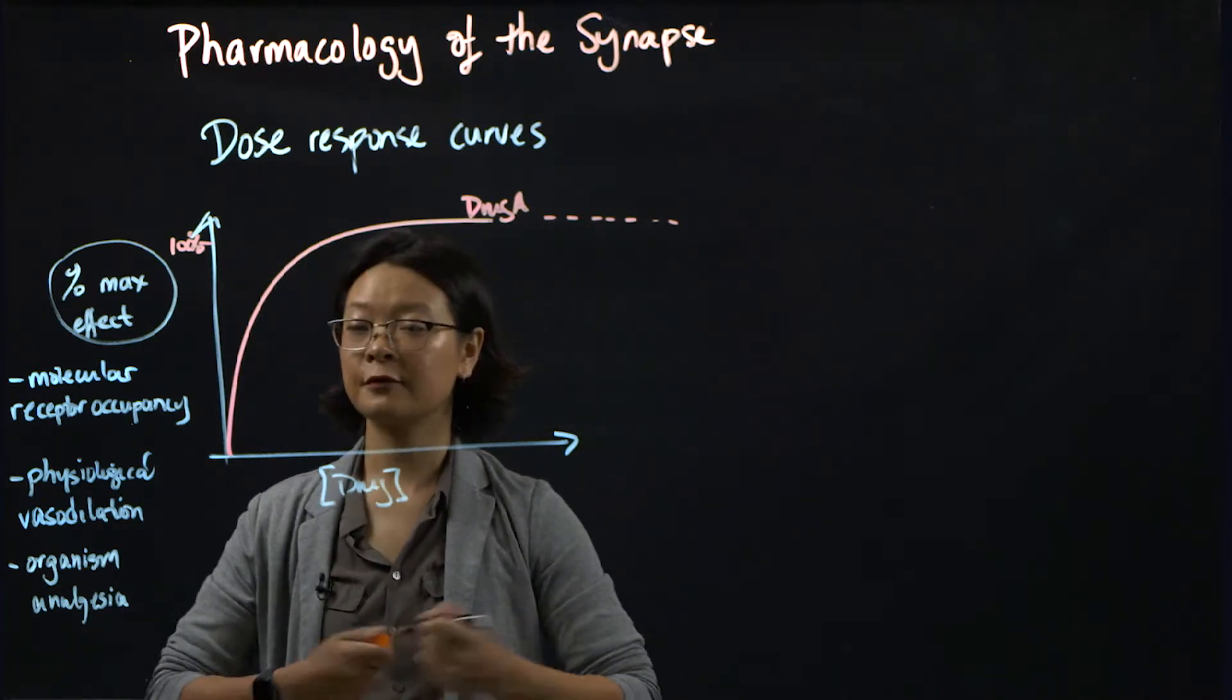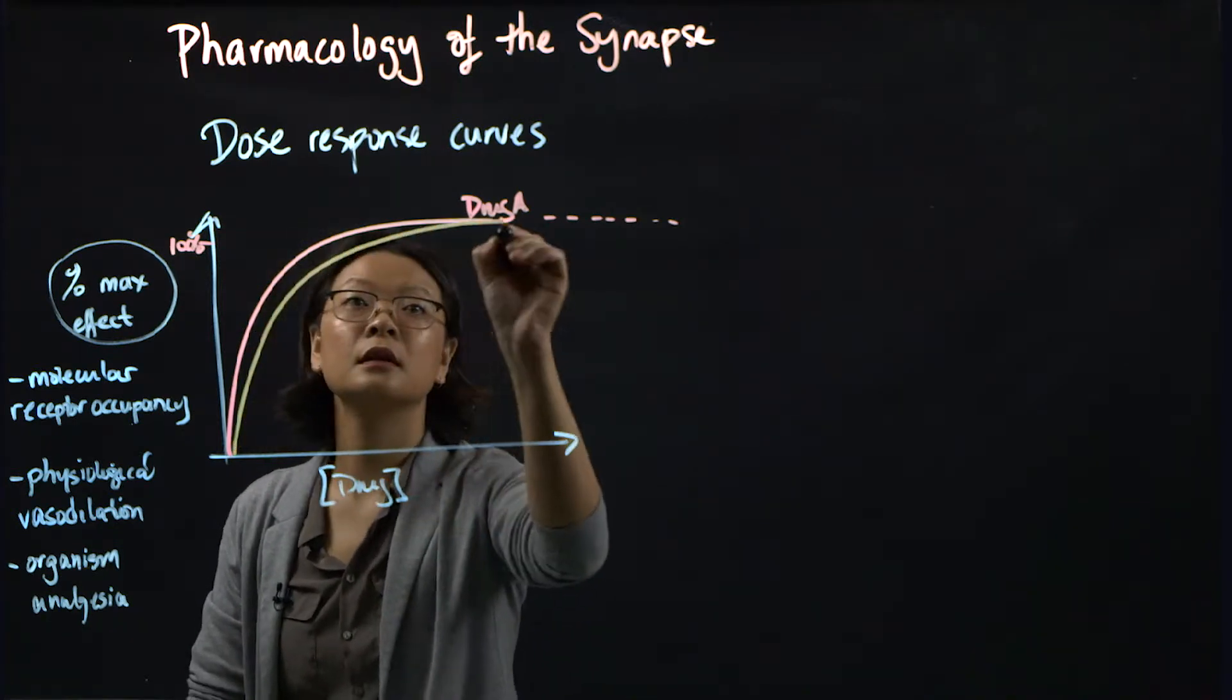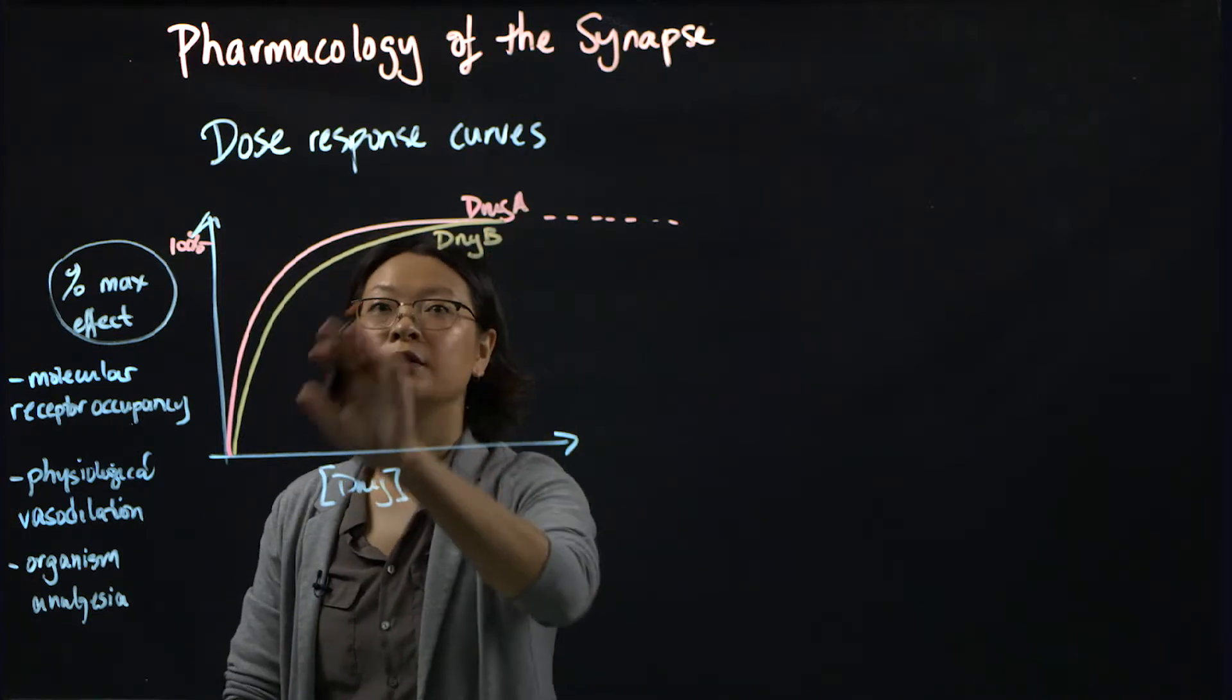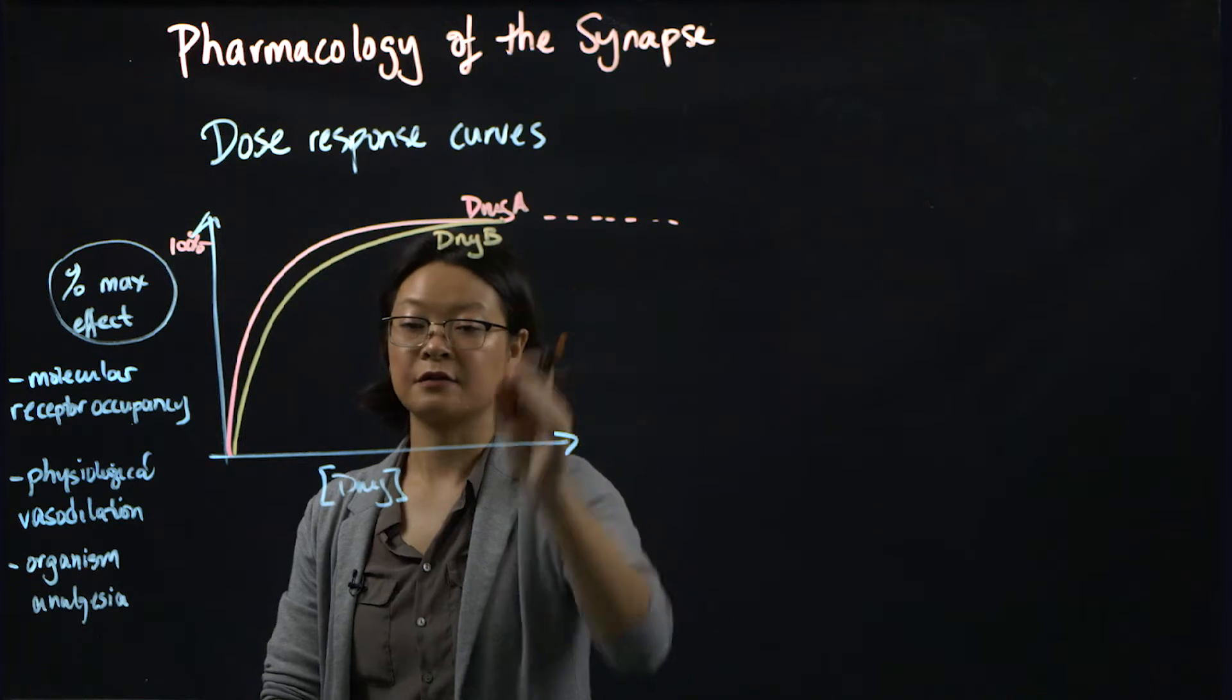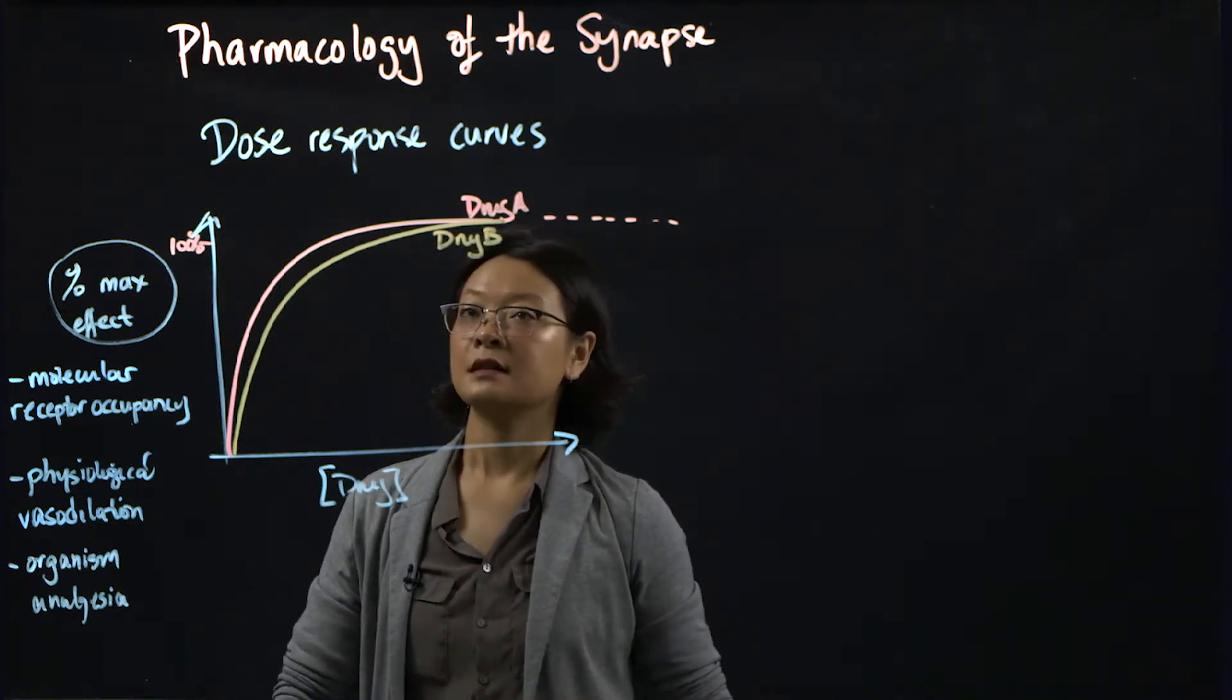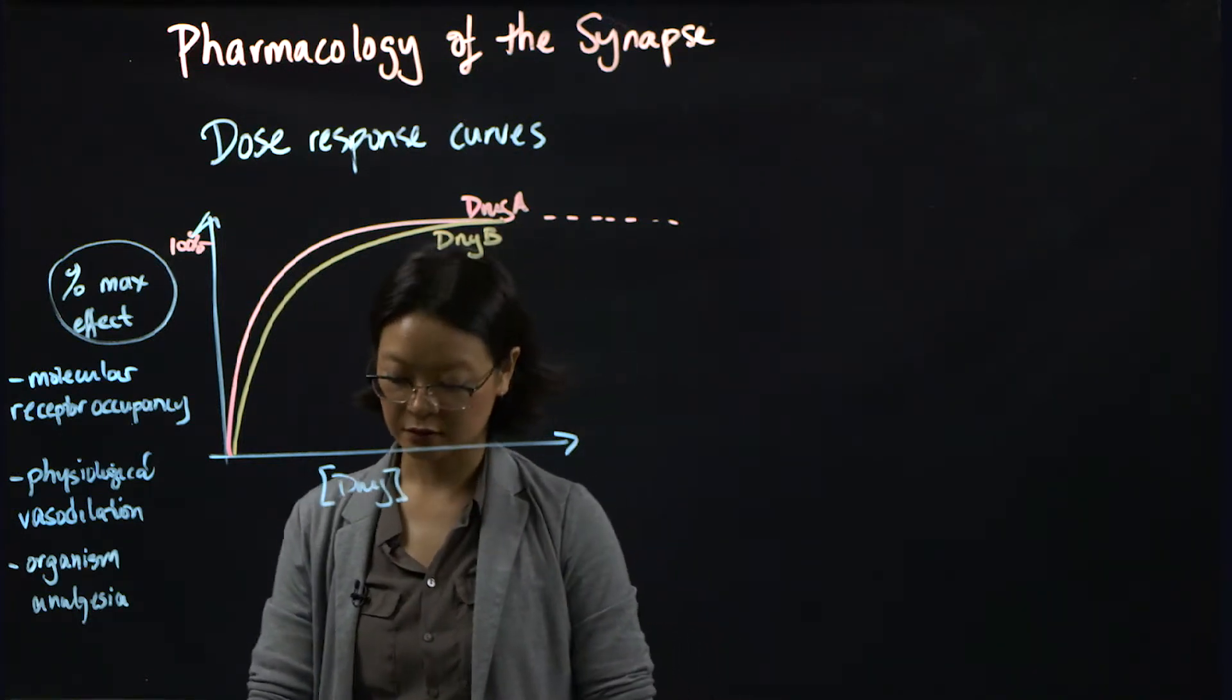If now you have a different drug, such as drug B, that does the same thing, it will also reach near 100 percent max effect as you increase the drug concentration. So there's a couple of concepts, pharmacology concepts, based on the dose response curve here.